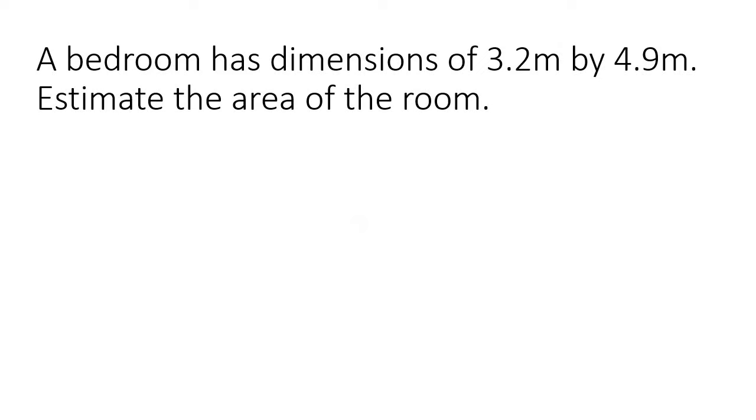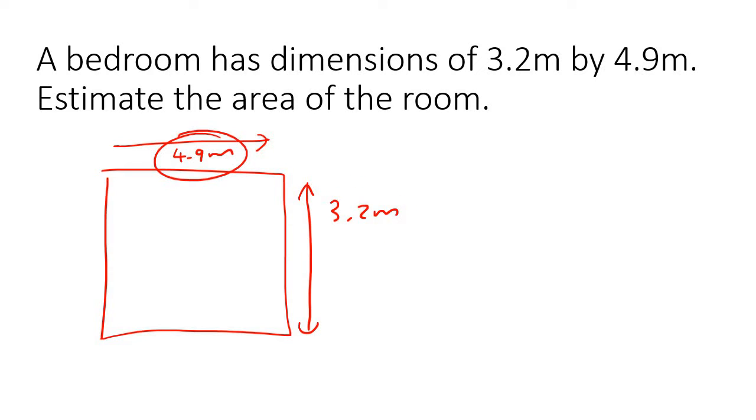A bedroom has dimensions of 3.2m by 4.9m. Estimate the area of the room. Now, you know that area of a rectangle is this number multiplied by this number. But that is really difficult to do. That is going to take you a long time to calculate. So what you would rather do is you'll just change this number to a 5, just change this number to a 3, and then that's easy. 5 times 3 is 15 meters squared.